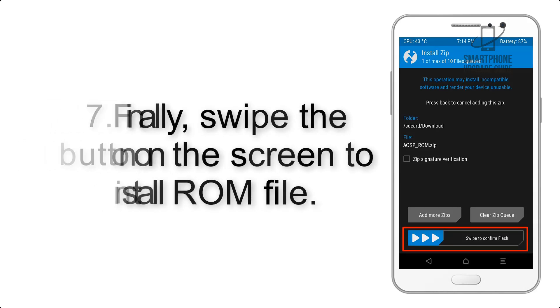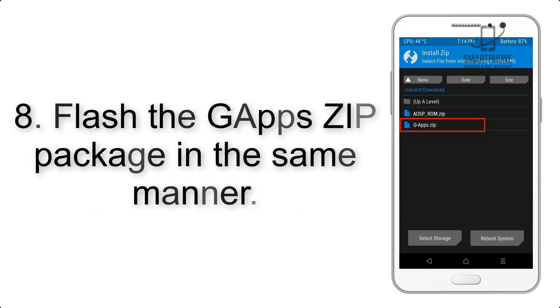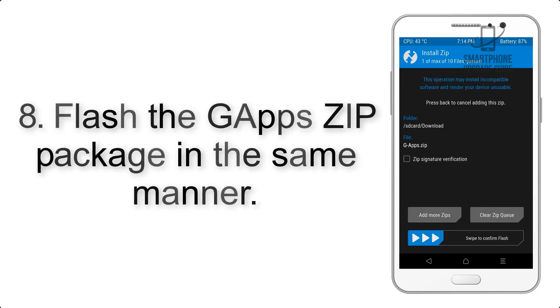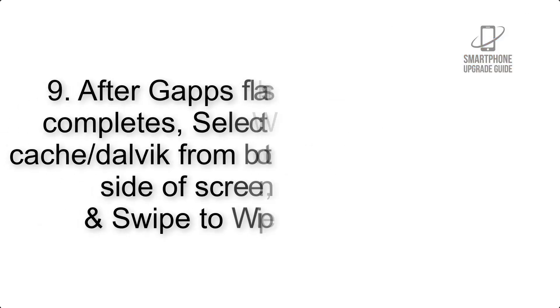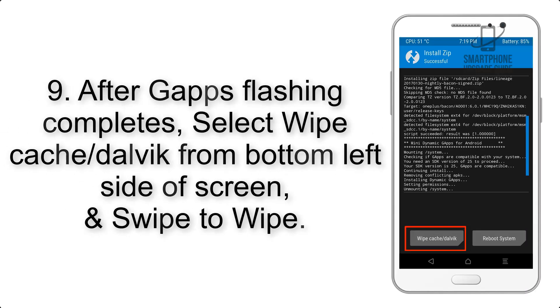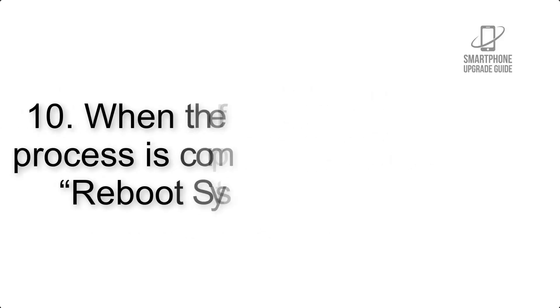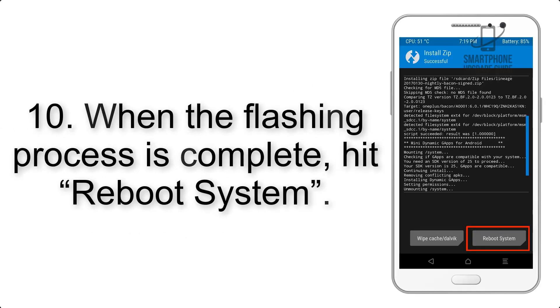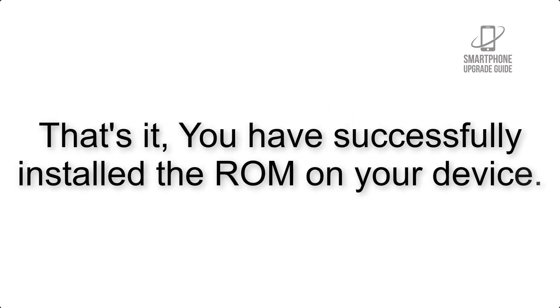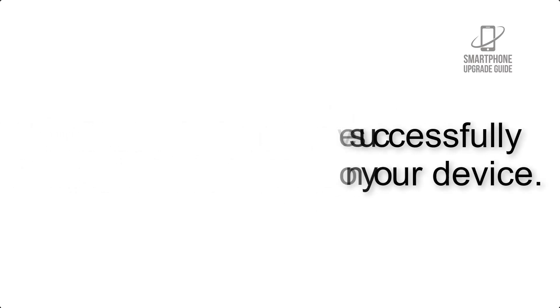Step 7: Swipe the button on the screen to install the ROM file. Step 8: Flash the GApps zip package in the same manner. Step 9: After GApps flashing completes, select Wipe Cache and Dalvik from the bottom left side of the screen and swipe to wipe. Step 10: When the flashing process is complete, hit Reboot System. That's it — you have successfully installed the ROM on your device.